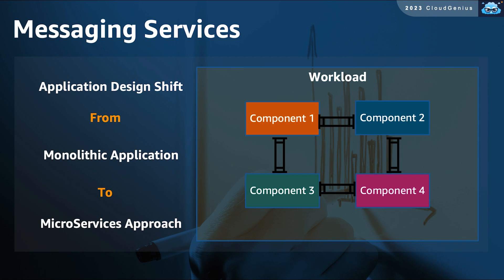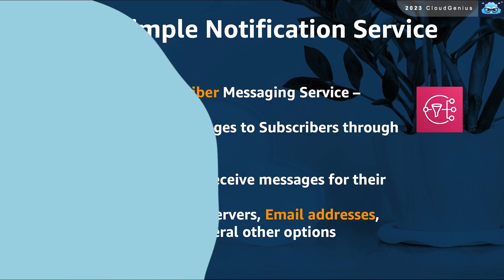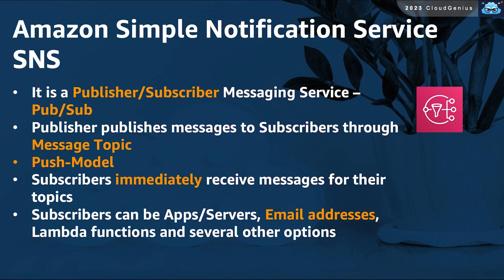We will study two messaging services from AWS: SNS and SQS. SNS is short for Simple Notification Service. It is a messaging service that follows a model known as the Publisher-Subscriber model, or PubSub. The publisher and the subscribers communicate through a message topic. Subscribers subscribe to the topic they are interested in, while the publisher publishes messages to that same topic. When SNS receives a new message for this topic, it immediately pushes the message toward the subscribers. That is why we call this a push model.